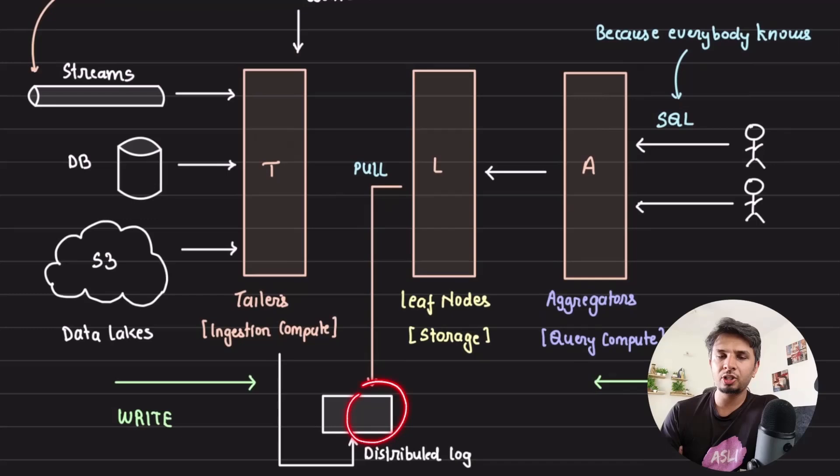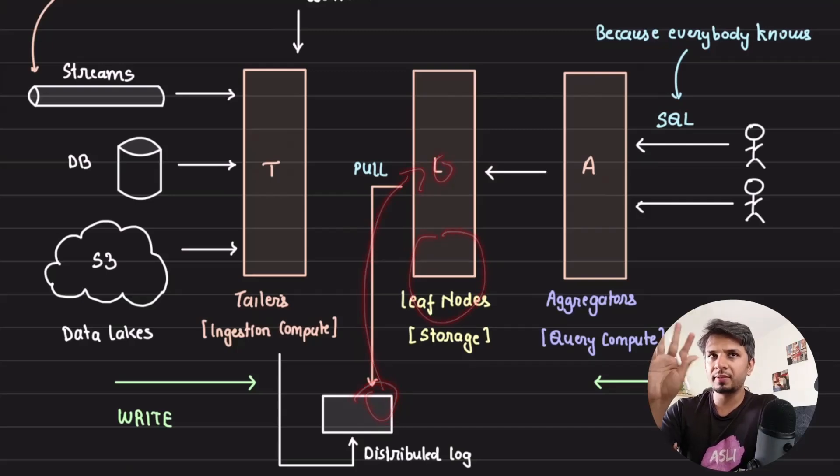From the distributed log, the leaf node pulls the data, and this is where your data is stored. The data is also stored on S3. We'll talk about how that happens - just hold on for a minute. So data is pulled by your leaf node and stored here. This is where your storage happens.